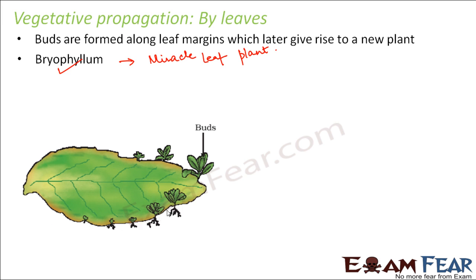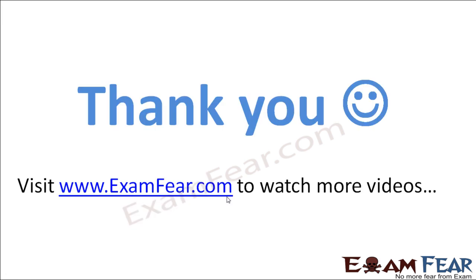On the boundary of the leaf — the leaf margin — buds are present in the notches. Under favorable conditions, these buds can give rise to new plants. Sometimes by wind or other external agents, these buds fall into the soil and give rise to new separate plants. They may also get carried away by animals to other places, where they grow into new plants. This is called vegetative propagation by leaves.